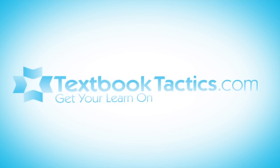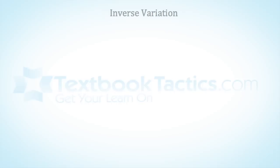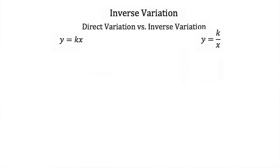This is a tutorial on inverse variation. An inverse variation equation looks similar to a direct variation equation. You may remember direct variation equations — they look like y is equal to k times x, where k is our constant of variation, just some number that gives us a relationship between y and x.